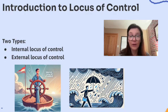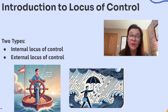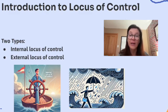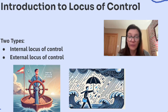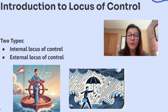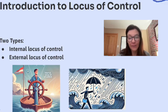Now let's look at external locus of control. People with an external locus of control believe that outcomes are determined by external factors like luck, fate, or other people. They think, 'my life is controlled by forces outside of me.' For example, 'I did well on the test because the teacher made it easy,' or 'if I fail, it's because the test was unfair.'